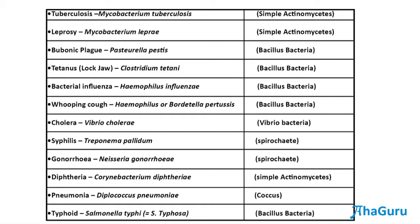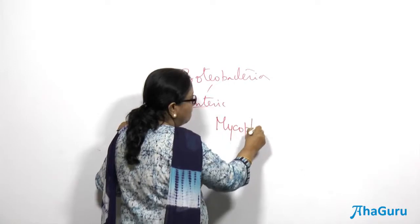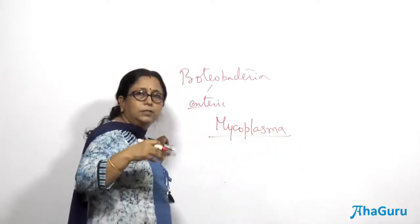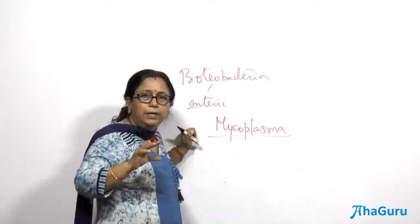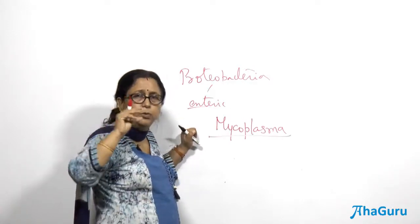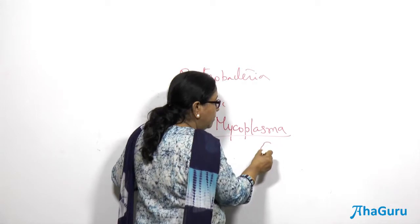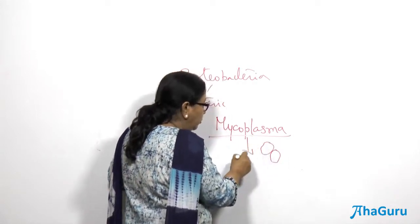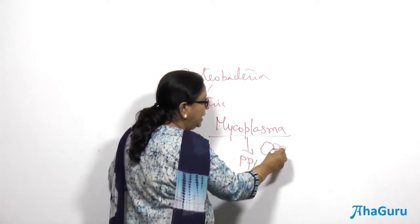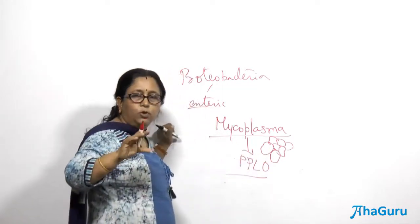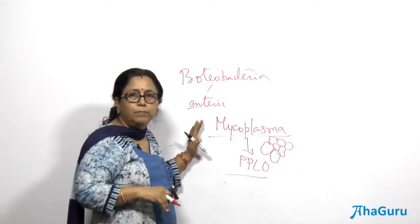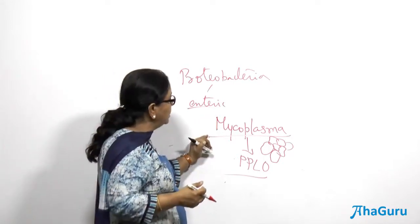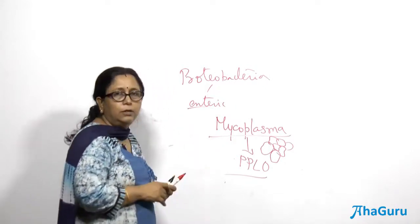There are certain bacteria smaller than typical bacteria that do not have a cell wall — these are called mycoplasma, also known as PPLO (pleuropneumonia-like organisms). They are the smallest prokaryotes, possessing only a cell membrane. They form a fried-egg-like colony visible under the microscope. Mycoplasma causes various diseases in plants, generally causing yellowing diseases, and also causes diseases in humans.